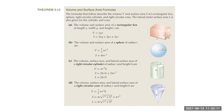The volume of a sphere of radius r is (4/3)πr³, and the surface area of the sphere is 4πr². For a cylinder of radius r and height h, the volume is πr²h, the total surface area is 2πrh + 2πr², and the lateral surface area — meaning only the curved side, not the top and bottom — is 2πrh.